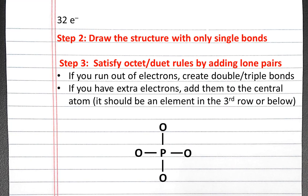Or, if we have extra electrons, we can put them on the central atom if that atom is an element in the third row or below in the periodic table.